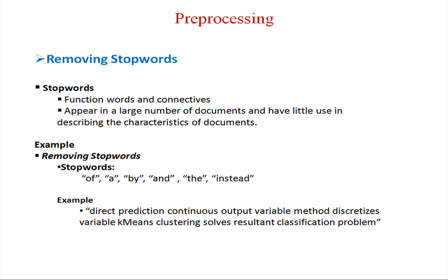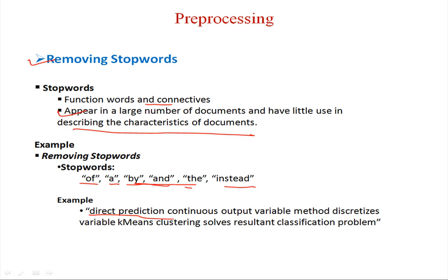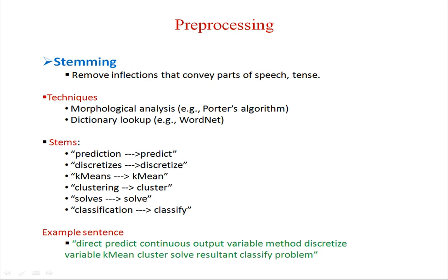The first task is preprocessing. In preprocessing, the major task is removing stop words. Stop words are common words like 'of', 'a', 'and', 'by', etc. There exists a list of stop words we can use to remove them. These are function words and connectives that appear in a large number of documents and have little use in describing the characteristics of the documents.